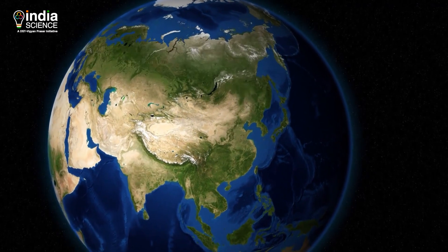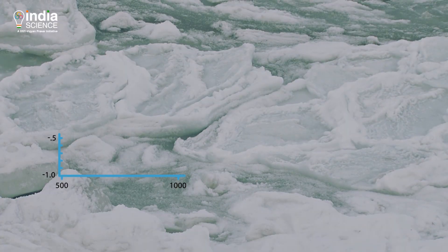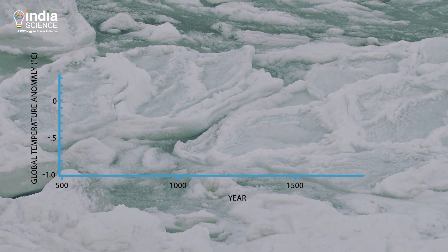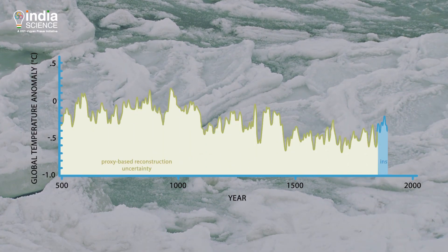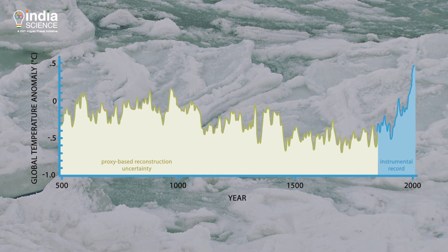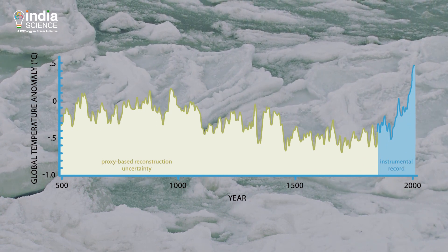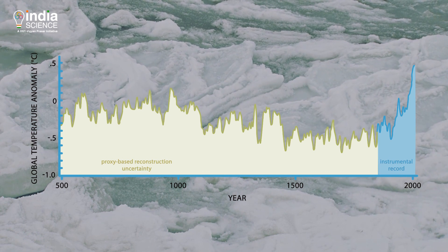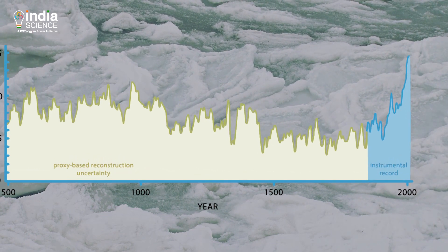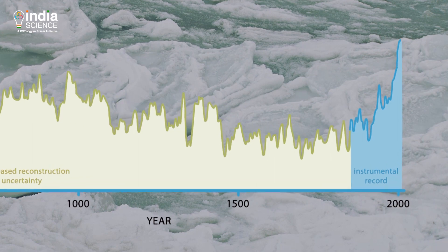Climate change refers to the average long-term changes over the entire Earth. To understand climate change, let us look at this graph. It shows the average temperature of Earth in the past 1,500 years. It shows that the Earth's temperature has constantly been changing, but the change observed in the past 100 years is quite unusual.